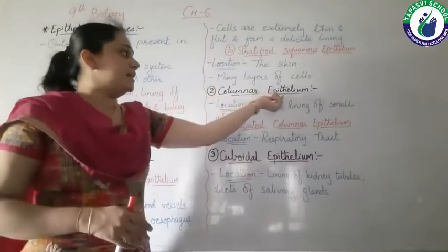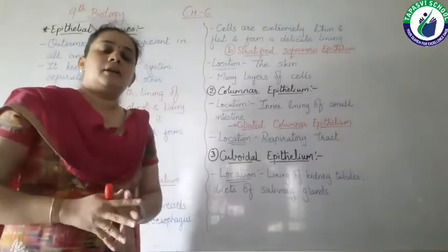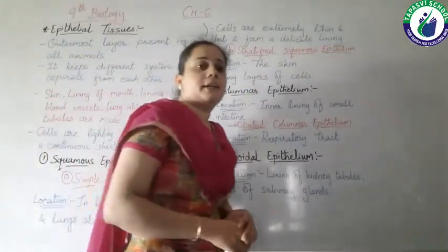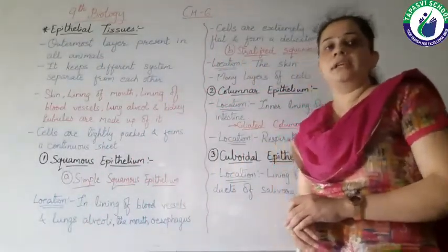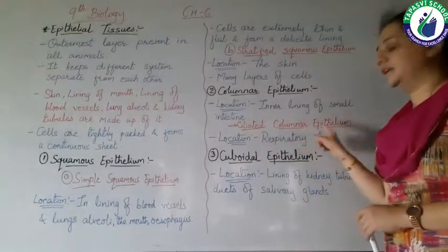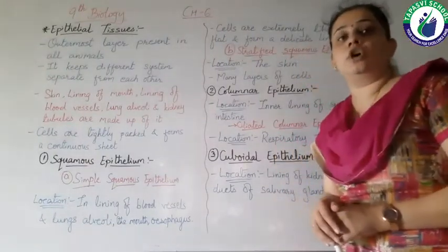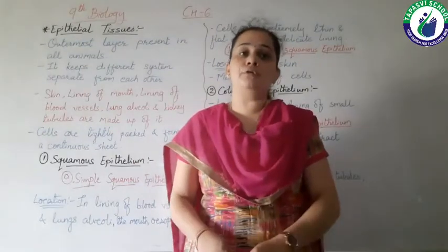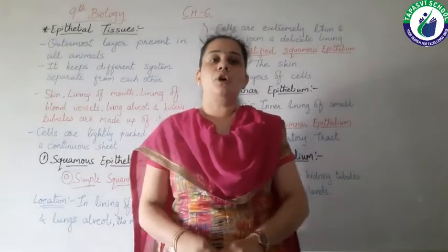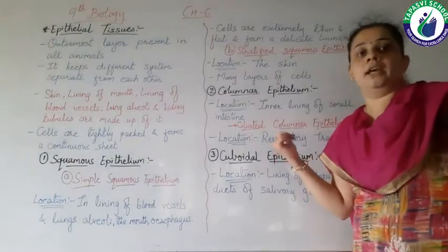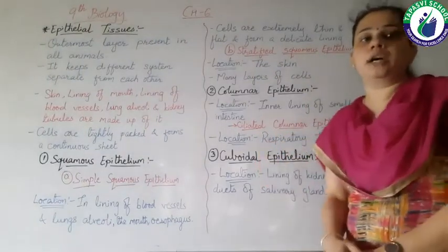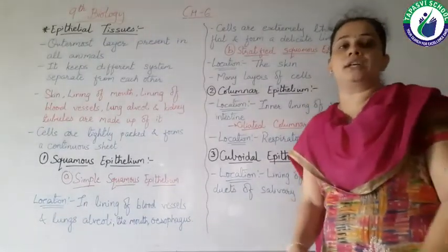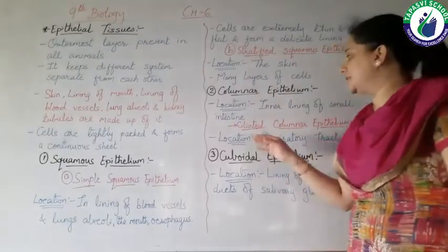Columnar epithelium consists of pillar-like structures present in the inner lining of the small intestine. When columnar epithelium is present in the respiratory tract, it is known as ciliated columnar epithelium because it has cilia-like structures on the surface. Cilia are finger-like projections present on the surface of cells. The cilia push down mucus in the respiratory tract, so the function of ciliated columnar epithelium is to move mucus through the respiratory tract.